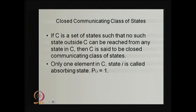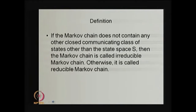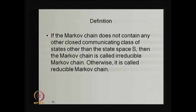Using a closed communicating class of states, we distinguish reducible from irreducible Markov chains. If the Markov chain does not contain any closed communicating class other than the full state space S, it is called an irreducible Markov chain. That means all states form one closed communicating class — each state communicates with every other — and that class equals S. Otherwise, it is a reducible Markov chain.